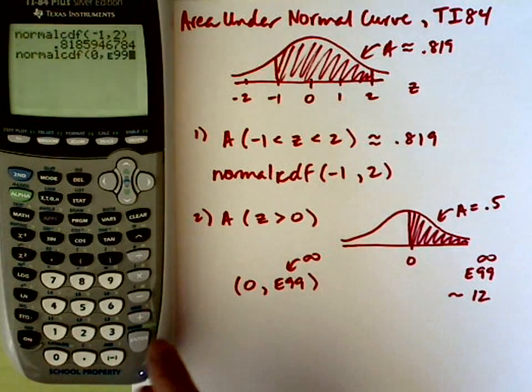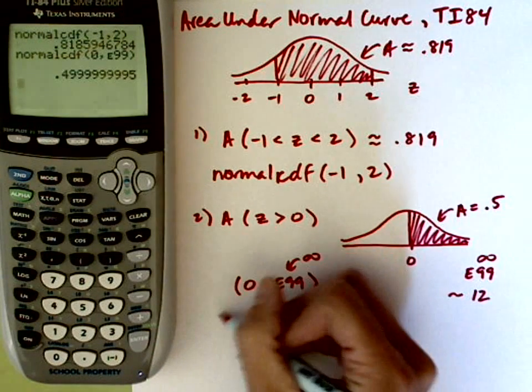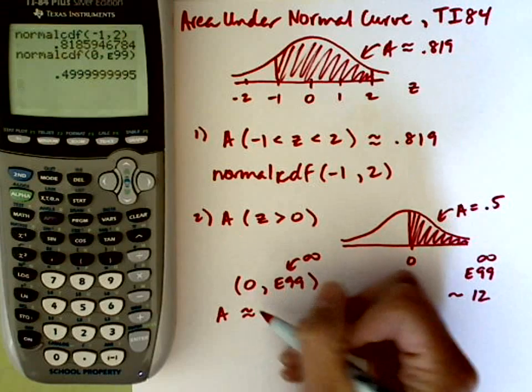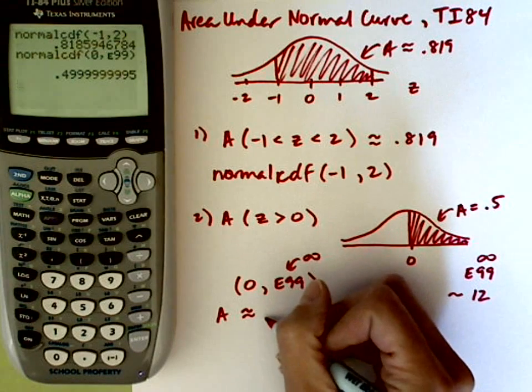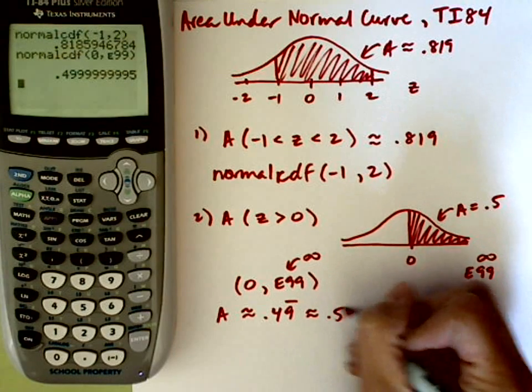This is signifying a huge number off to the right. Parenthesis, and then I hit enter, and I get an area that is approximately .49 repeating. So .49 repeating would be that .5 that we're looking for.